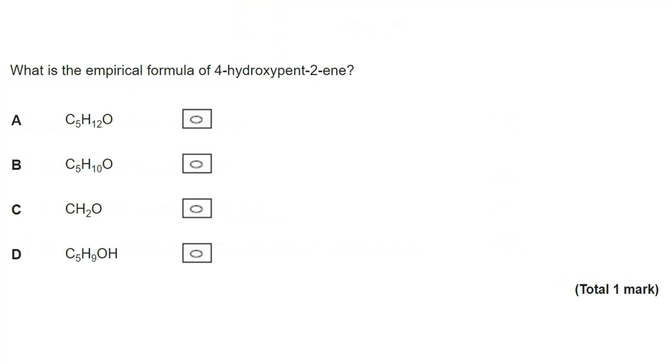Next question. So on this, I would always draw the structure out. To do that, you need to know a number of things. You need to know that pent means that it's a carbon chain of five, that it's an ene, so it has a double bond, and that's on the second carbon, and that there's a hydroxy, which is the prefix we use for an alcohol where we can't use the suffix, and that's on the fourth carbon. So I have numbered from left to right here.